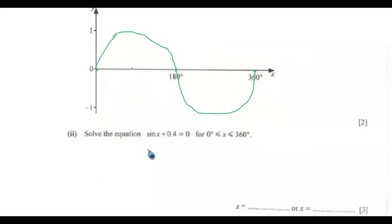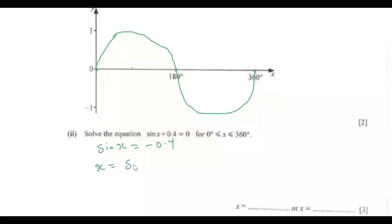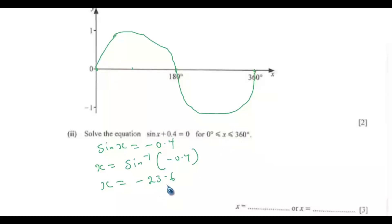We also need to solve sin x + 0.4 = 0 for the given range. This gives sin x = −0.4. Taking sin inverse of both sides: x = sin⁻¹(−0.4) = −23.6°. This is outside the given range, so −23.6° is not part of the solution.